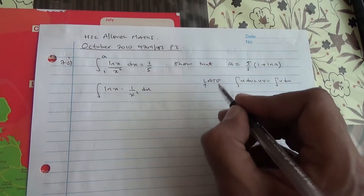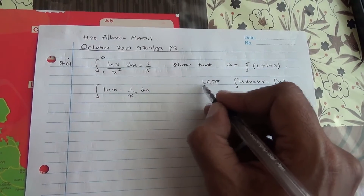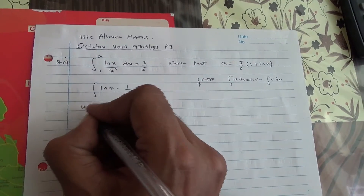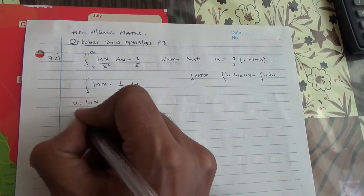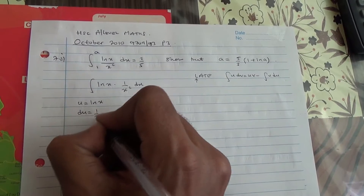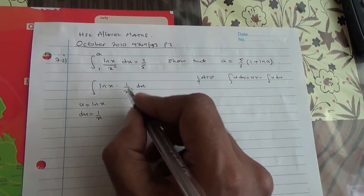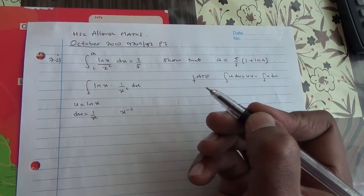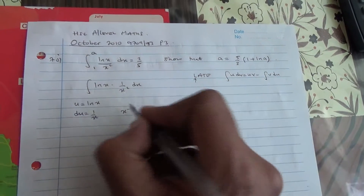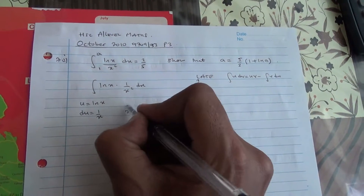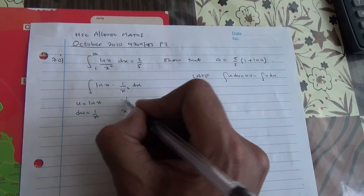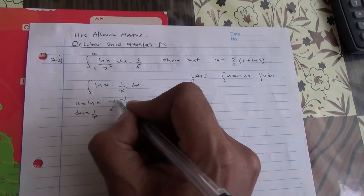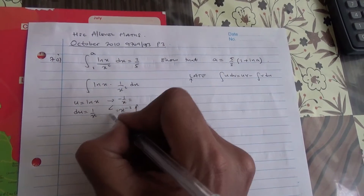The logarithmic fraction comes first, so we let u equal ln(x), therefore du equals 1 over x. Similarly, 1 over x squared is the same as x to the power minus 2. This is dv, and if we integrate this, it becomes minus 1 over x, which is v.